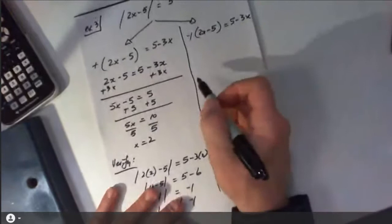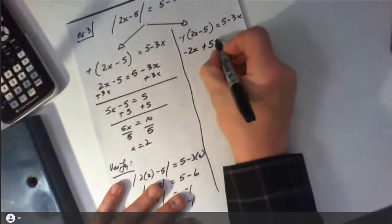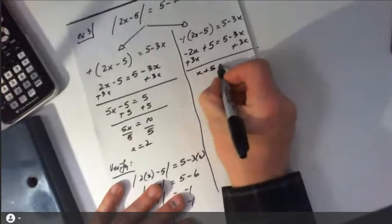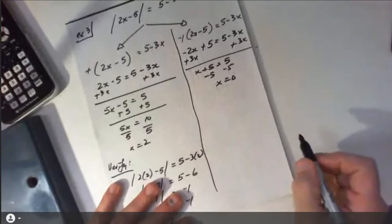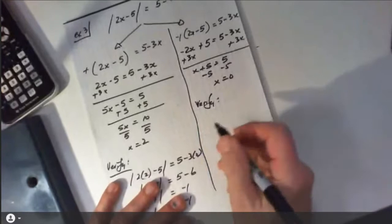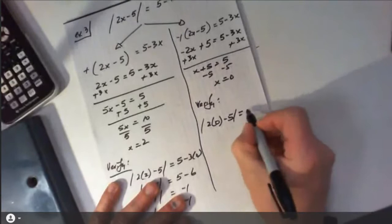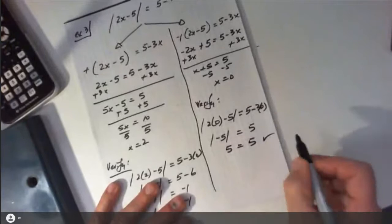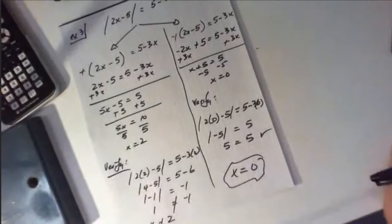Now we check the other side. This would be negative 2x plus 5 equals 5 minus 3x. Adding 3x to both sides gives me x plus 5 equals 5. Subtracting 5 gives an answer of x equals 0. Let's verify: it's 2 times 0 minus 5 equals 5 minus 3 times 0, which is the absolute value of negative 5 equal to 5. This checks out, so the only acceptable answer is x equals 0.